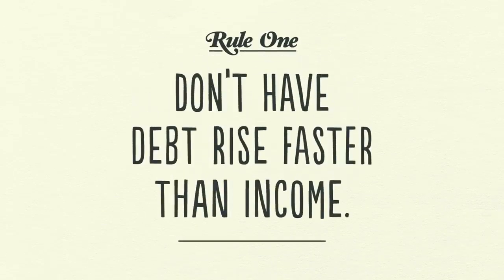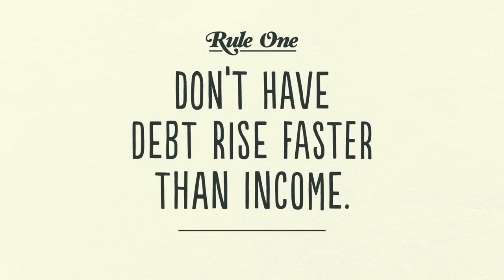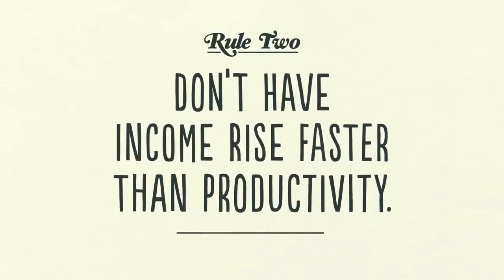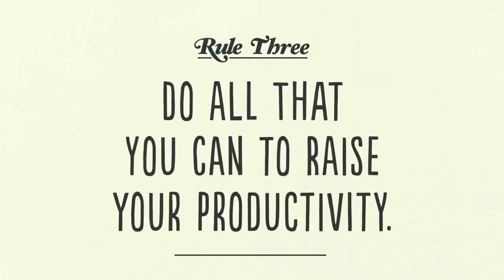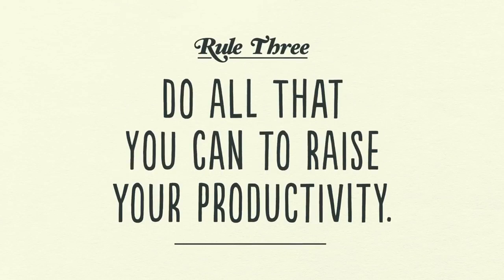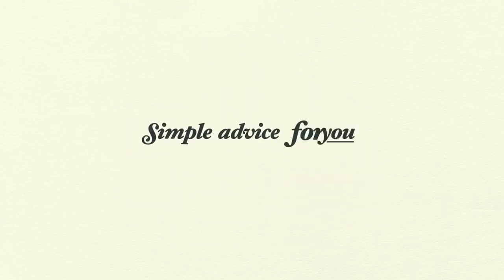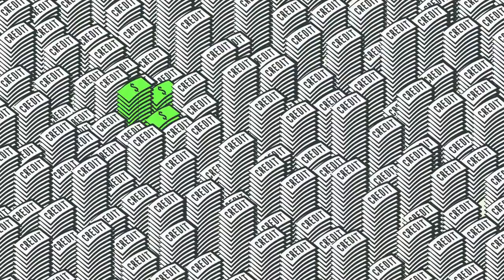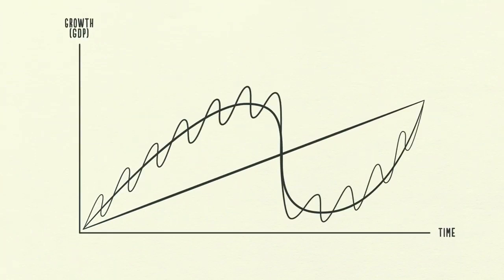First, don't have debt rise faster than income because your debt burdens will eventually crush you. Second, don't have income rise faster than productivity because you'll eventually become uncompetitive. And third, do all that you can to raise your productivity because in the long run, that's what matters most. This is simple advice for you and it's simple advice for policymakers. You might be surprised, but most people, including most policymakers, don't pay enough attention to this. This template has worked for me and I hope it will work for you.